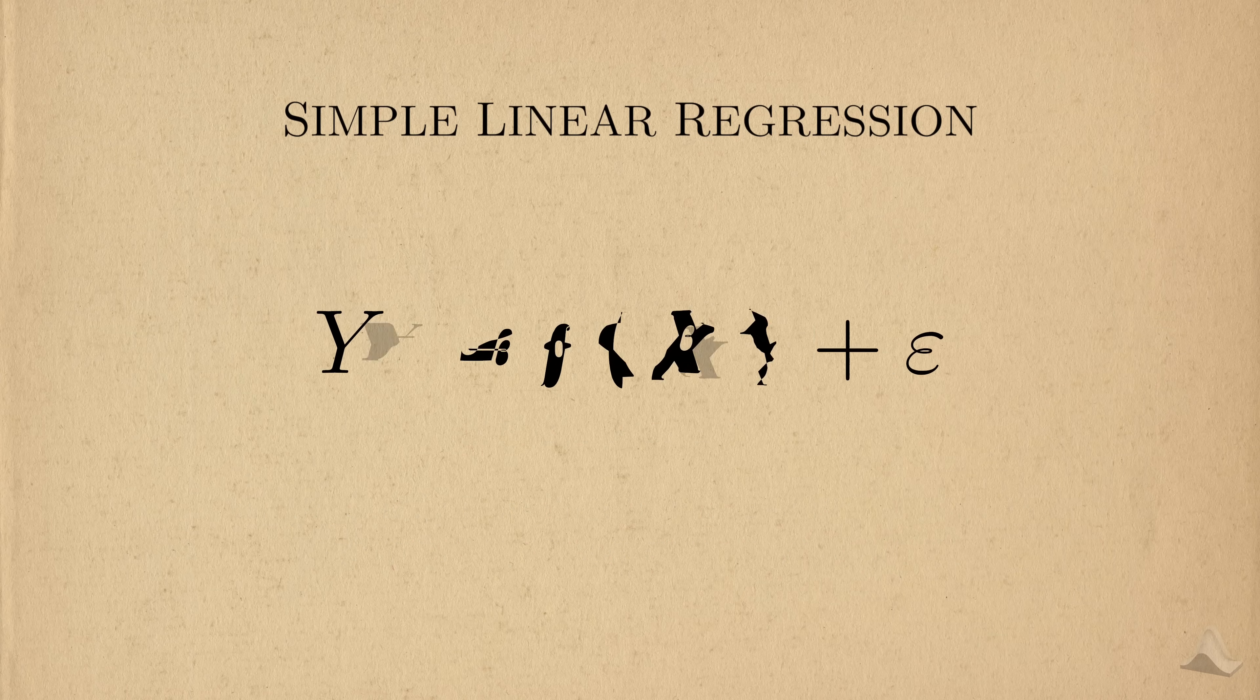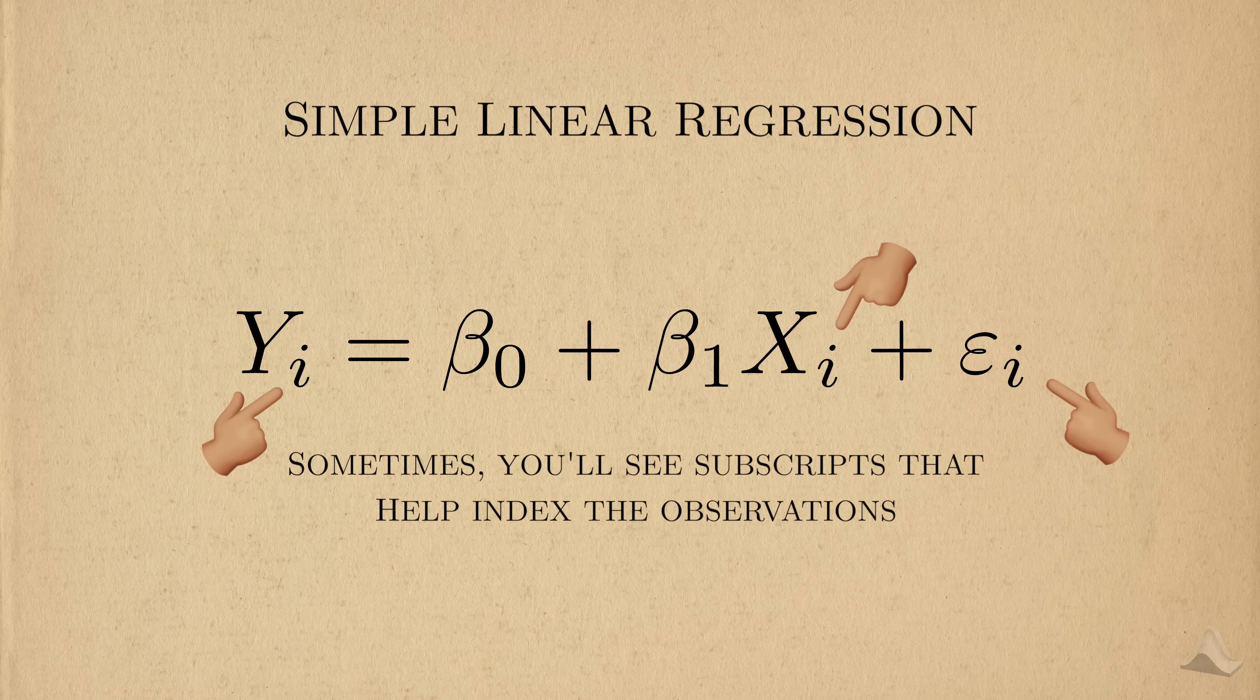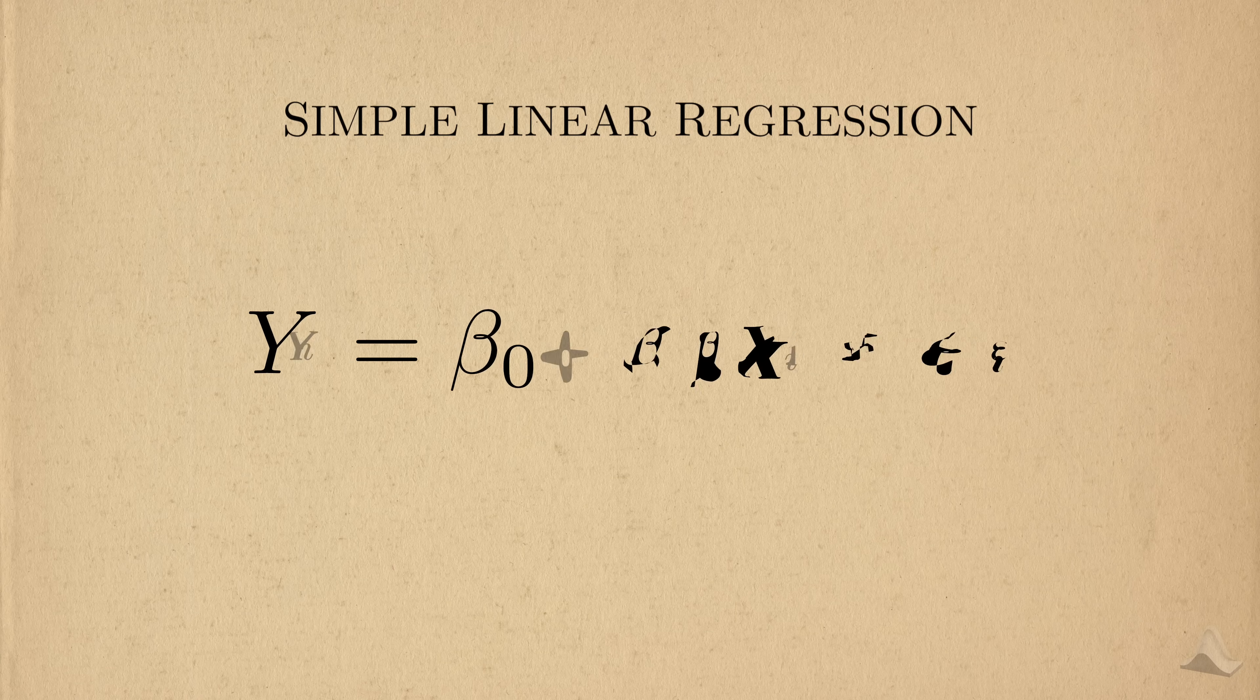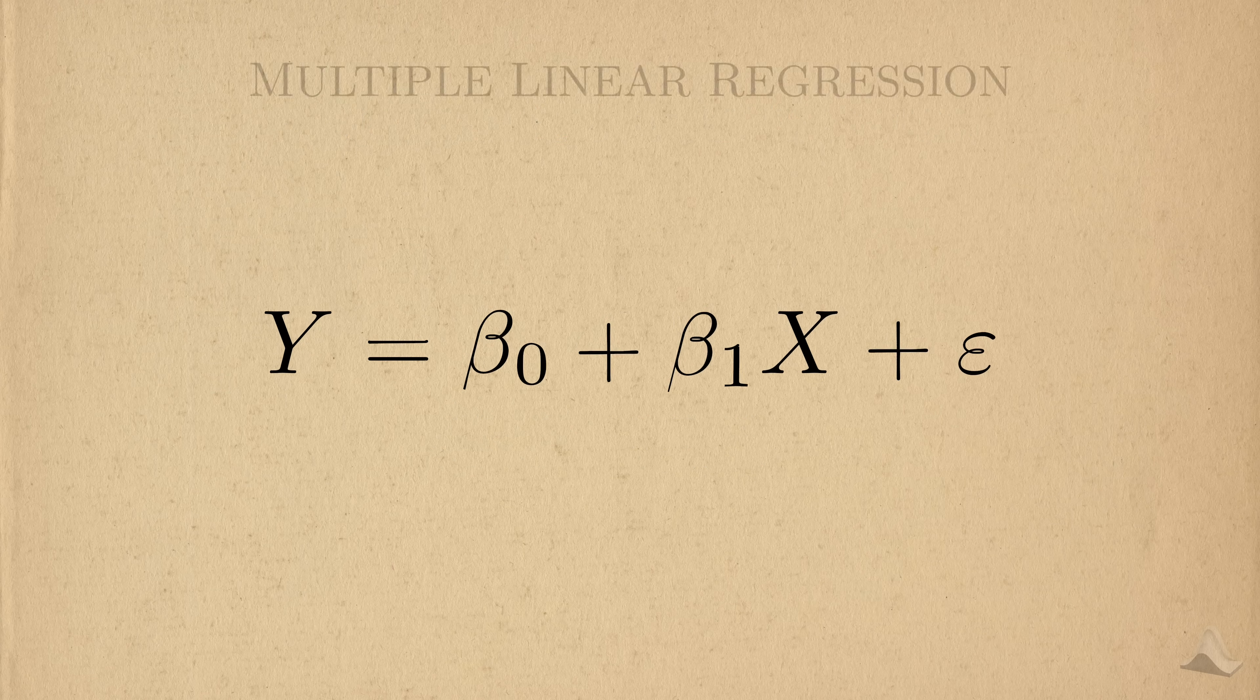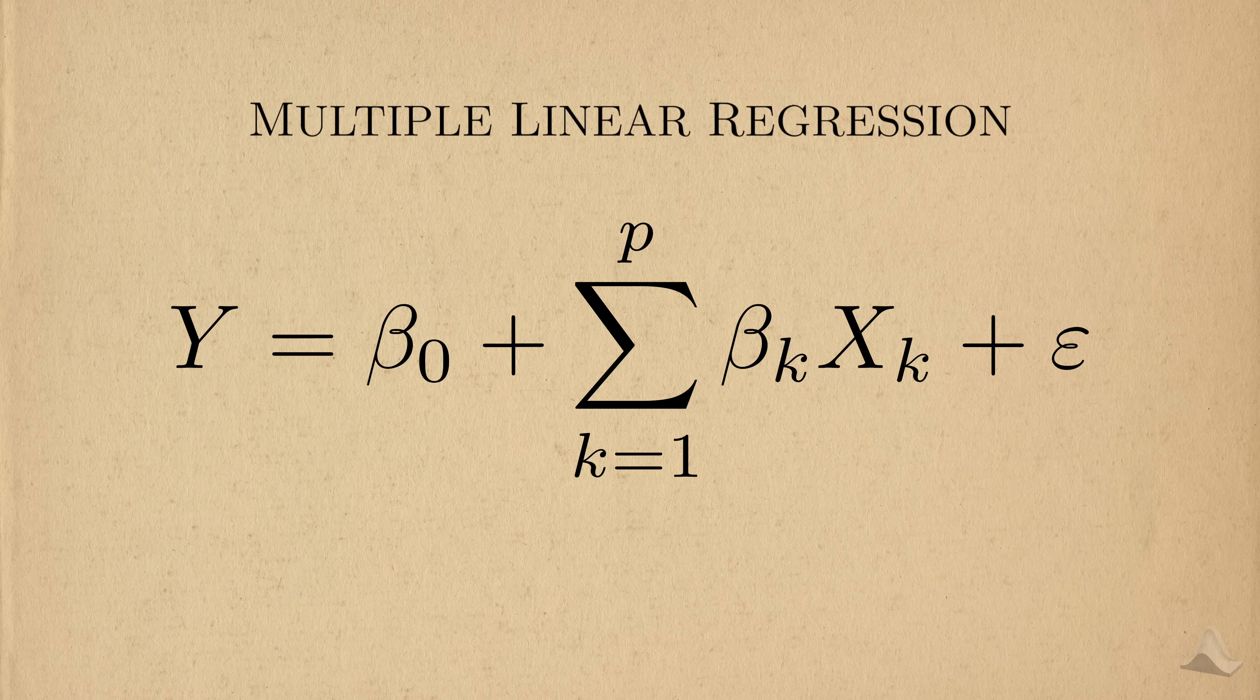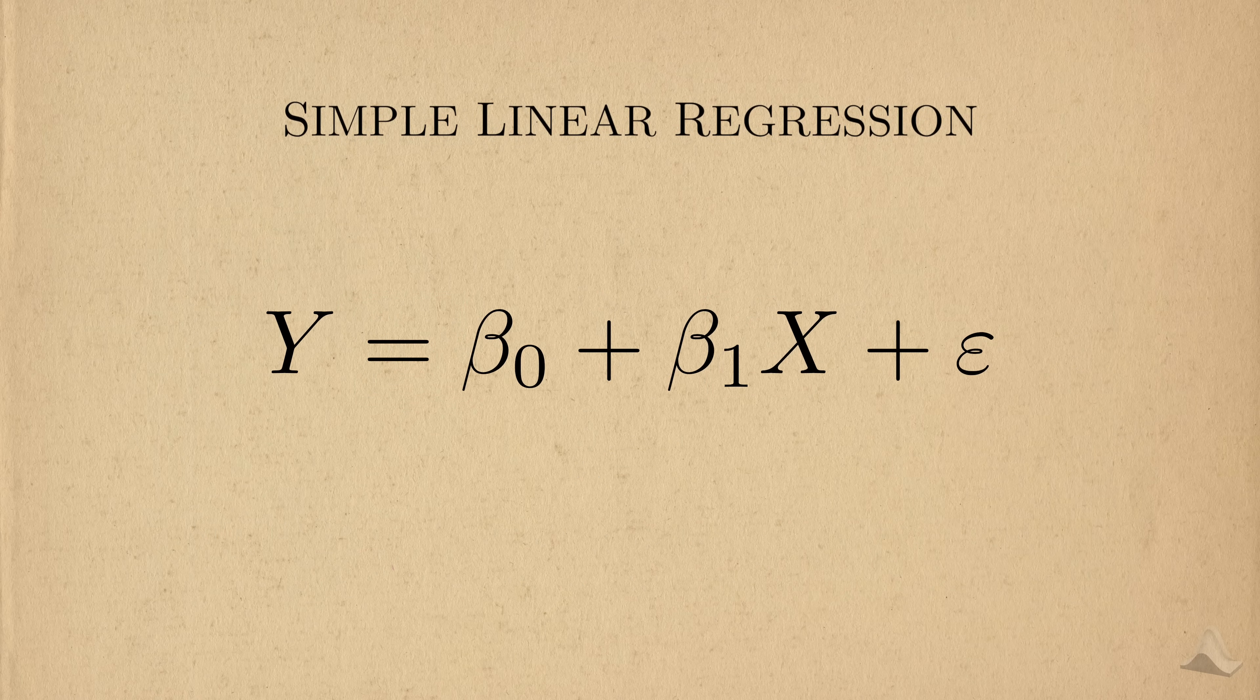The simplest form of linear regression looks like this. Sometimes you might see different subscripts here to index different observations, but I'll keep them out for simplicity. In simple linear regression, we only have an intercept and one non-intercept coefficient, but with multiple linear regression, we can have multiple non-intercept covariates. Linear regression gets its name from the fact that the outcome is linear in the parameters. For now, I'll focus on a single covariate.